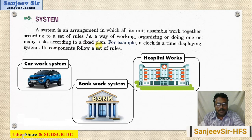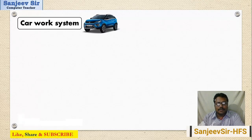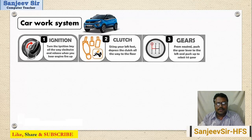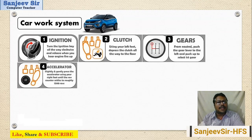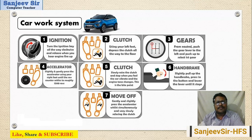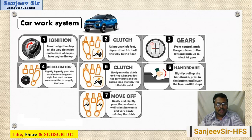We discuss the car system, bank work system, and hospital work system. For a car, when we start to drive, we follow these steps: first start the engine, second use the clutch, third change the gear to one, then use the accelerator, release the clutch, release the handbrake, and then move using the clutch, gear, and steering. Each individual component — clutch, accelerator, handle, steering, gear — is used in a proper order.